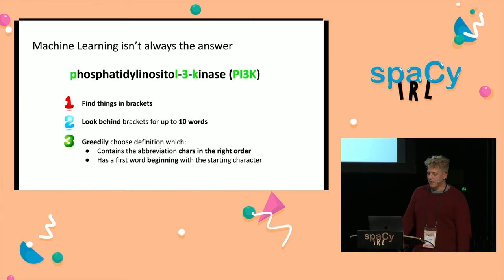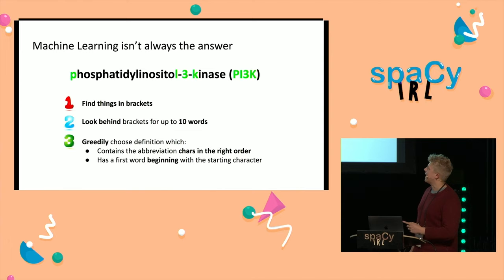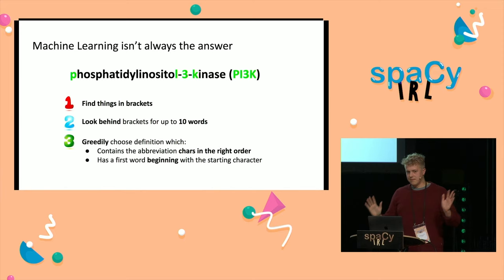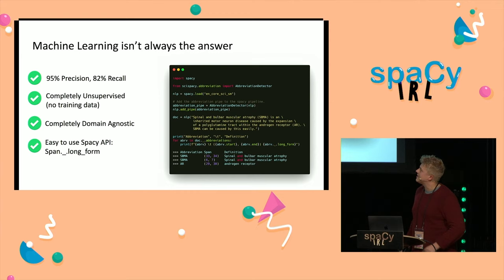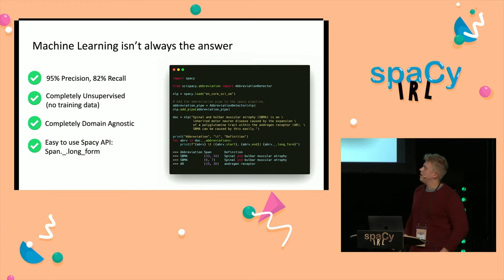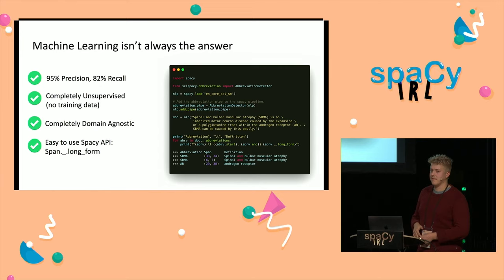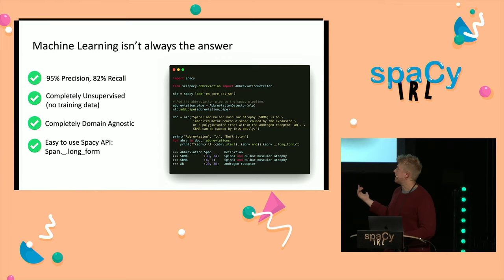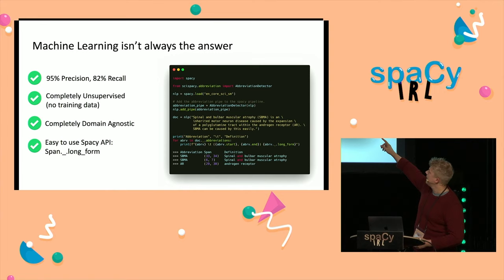It turns out there's a really simple way to do this: you find things in brackets, look behind the brackets for ten words, and greedily choose a definition which contains the abbreviation characters in the right order — so like P, L, 3, K — and has the first word of the full definition beginning with the same character as the abbreviation. There's no machine learning involved, and it gives you 95% precision and 82% recall, which is pretty good. It's also completely unsupervised and domain-agnostic, so you could use it in, say, a construction company context very easily. Custom components let you take advantage of the straightforward spaCy API — you just add a pipe, pass some text, and you get spans associated with their long forms.